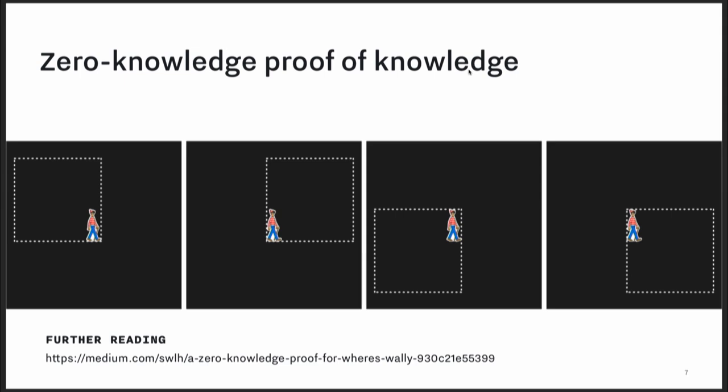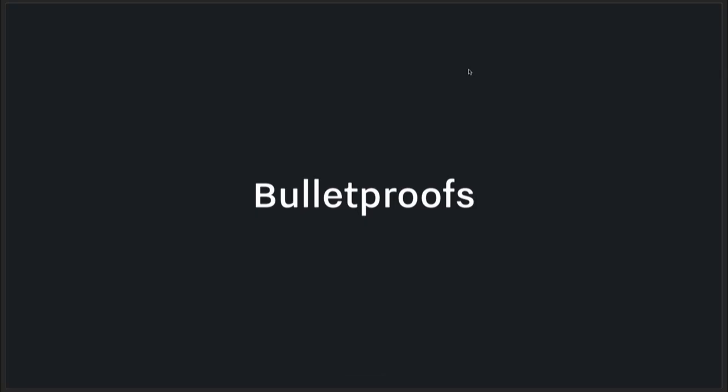So this is a pretty good intuitive example. You can go to the medium link which shows a fuller explanation of this example. But maybe that's not satisfying because this is extremely visual and you want to understand more about how the actual math works. So I'll dive a little bit into the Bulletproofs paper and explain how it achieves the zero-knowledge proof property.